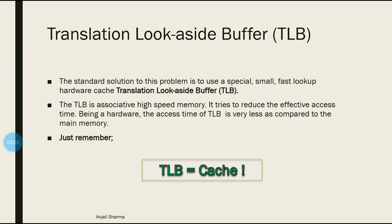We store recently accessed pages in the TLB. Since pages are placed into frames, to access a frame we must have performed the complete address translation. We know the corresponding frame number because we have done the address translation, so that entry is put into the TLB, which acts as a cache. In the future, if we require that page number again, instead of checking the complete page table, we go to the TLB and find the frame number directly, reducing the excess time.